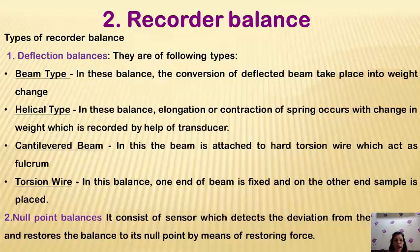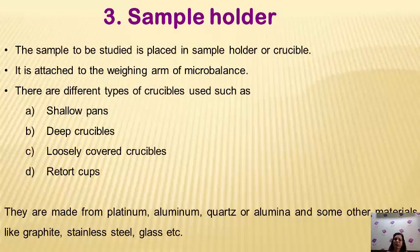Initially there were deflection balances, like a regular pan balance. Then balances with a string attached and a pan were used, showing the change in weight on the right-hand side. The null point balance shows deflection in weight and comes back to zero. Sample holder types include shallow open pans, dip crucibles, and loosely covered crucibles — where the lid is loosely covered so that gas released during heating can easily escape. Retort cups are compact containers.